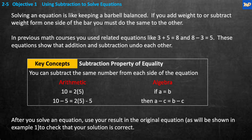Objective one: using subtraction to solve equations. Solving an equation is like keeping a barbell balanced. If you add weight to or subtract weight from one side of the barbell, you must do the same to the other side. In previous math courses, you used related equations like three plus five equals eight and eight minus three equals five. These equations show that addition and subtraction undo each other. Then a key concept: the subtraction property of equality.